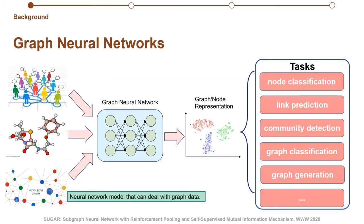Graphs have been widely used to model complex relationships between objects in many areas. By learning a graph, it's possible to capture the sequential, topological, geometric, and other relational characteristics of structured data. With the recent advances in deep learning, graph neural networks have achieved significant success in mining graph data. Generally, graph neural networks follow a message passing scheme recursively to embed graphs into a continuous and low-dimensional space.